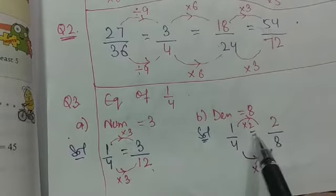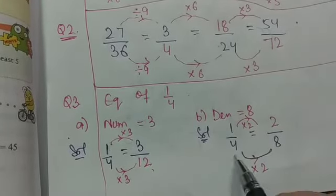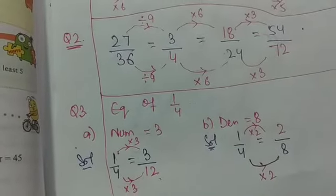So here it is 1 by 4 equals to blank upon 8. 4 into 2 is 8. That means 1 into 2 will be 2.